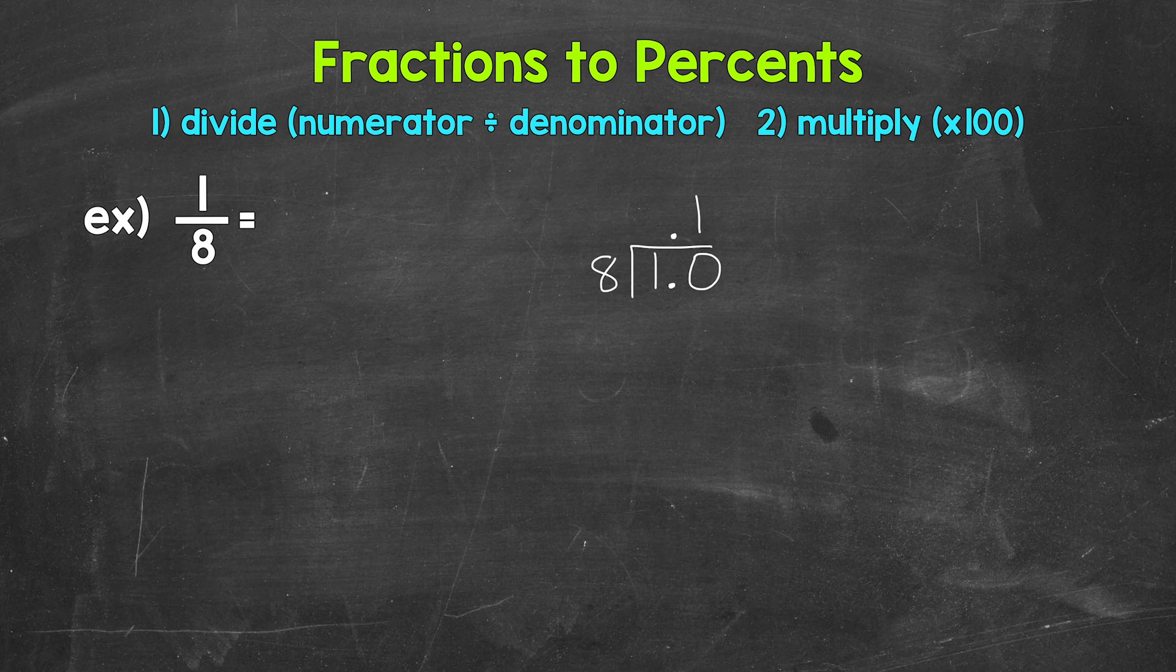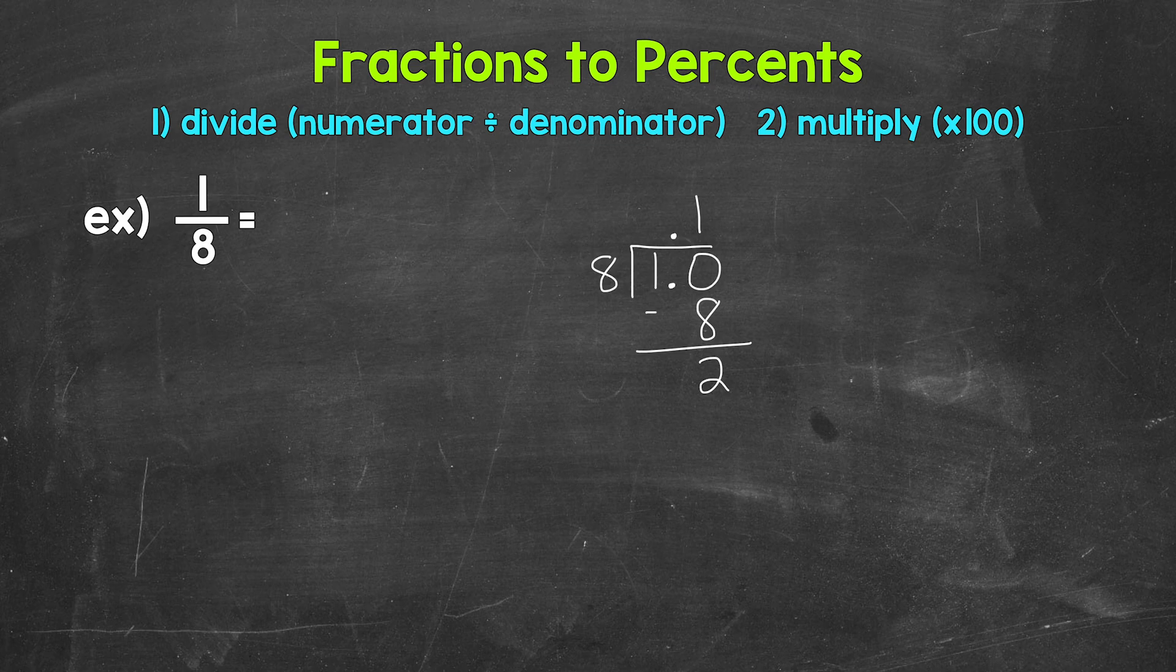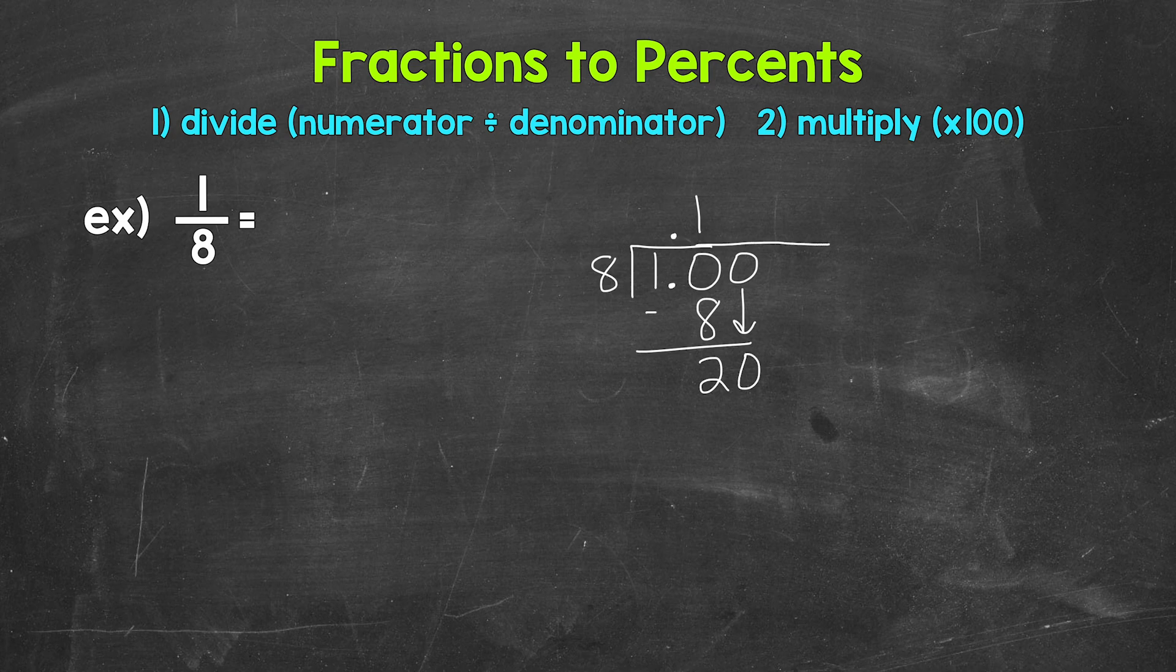Now we multiply. 1 times 8 is 8. Subtract. 10 minus 8 is 2. So we don't have a clean cut zero there at the bottom, so we need to continue on by using another zero that we can bring down. And I'm going to extend the division bar here. Now we have 20.